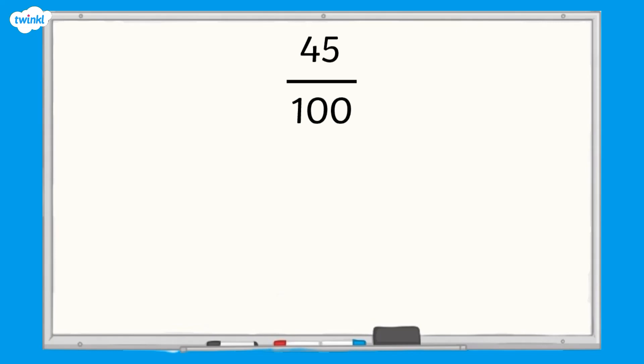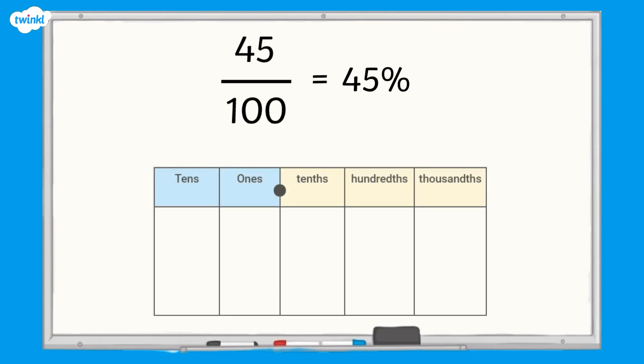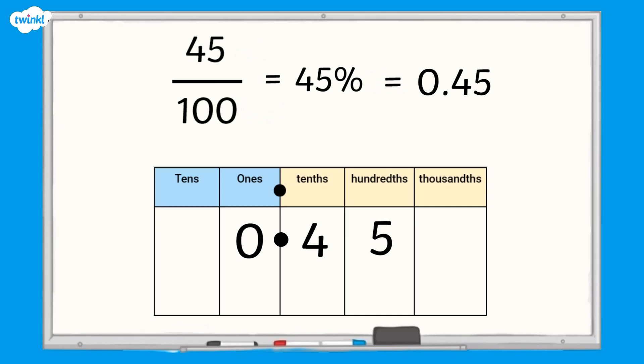Let's look at how we find the equivalent percentage and decimal for this fraction. We have forty-five hundredths. Because percent means out of one hundred, forty-five hundredths is equivalent to forty-five percent. Forty-five hundredths can be partitioned into four tenths and five hundredths, which we can write as a decimal, zero point four five. So forty-five hundredths is equivalent to forty-five percent and zero point four five.